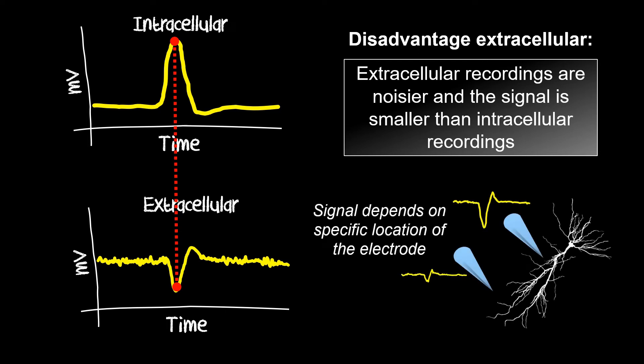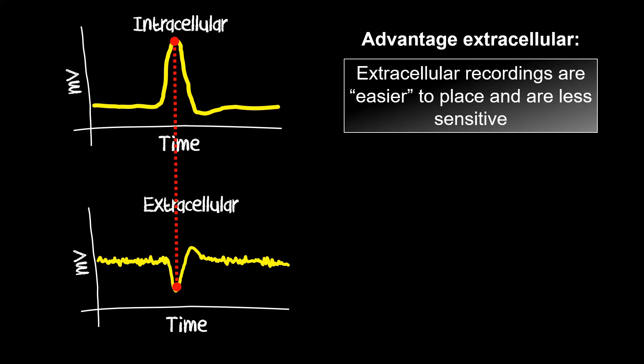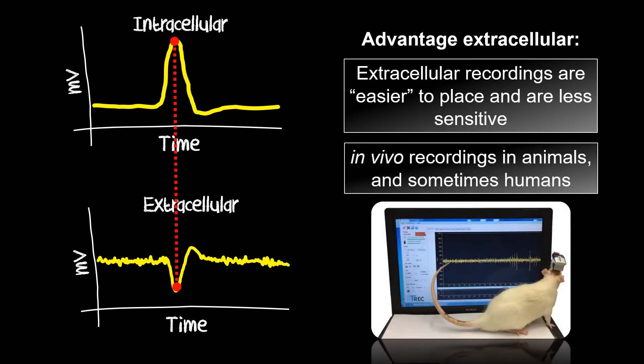Even though single unit placement requires a lot of expertise and precision, it is generally less demanding than intracellular electrode placement. But, despite smaller and noisier signals, the major advantage of extracellular single unit recordings is that they are more robust after placement, and therefore can be done in live animals and occasionally in humans.